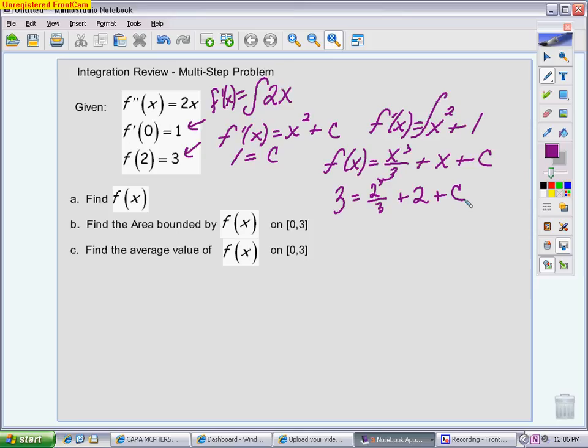And then add 2 to that, so we end up with this being 14 thirds plus c, subtract 14 thirds from both sides, so 3 minus that 14 thirds, giving me a c value of negative 5 thirds.